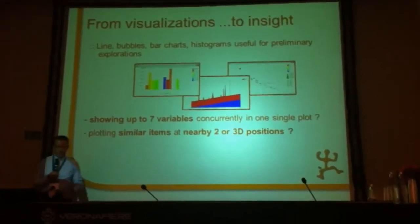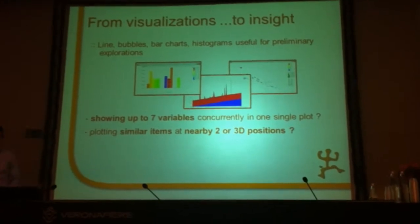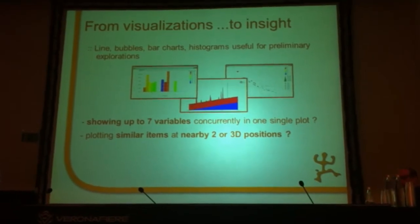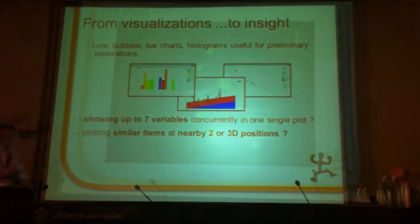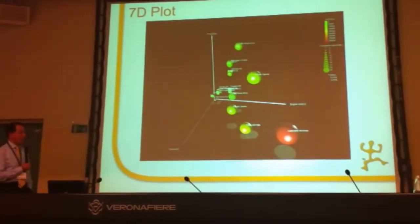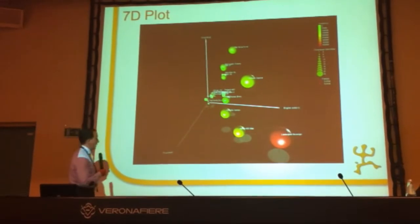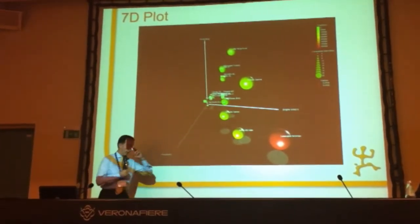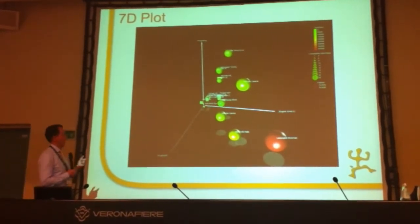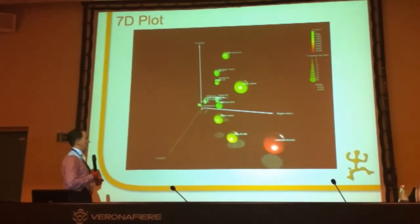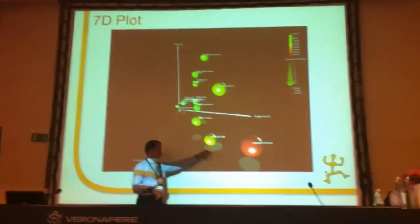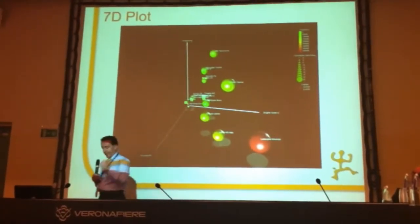And you can use what we call similarity maps. The idea is that you want to map similar items to similar positions in a three-dimensional space. With our 7D plot, you can associate three variables with the x, y, and z dimensions. Then you can use color, dimension, form, blinking, and you can project your objects onto the floor.